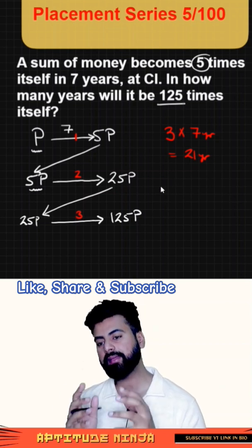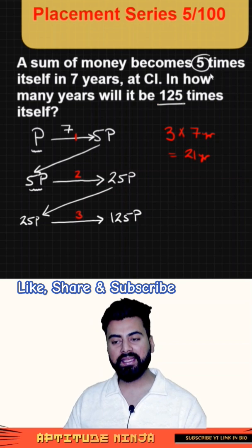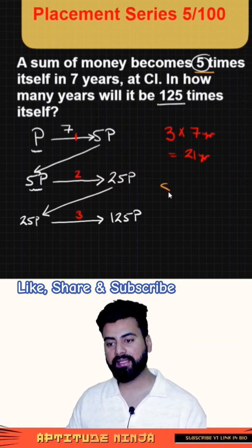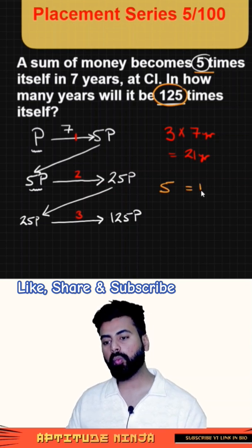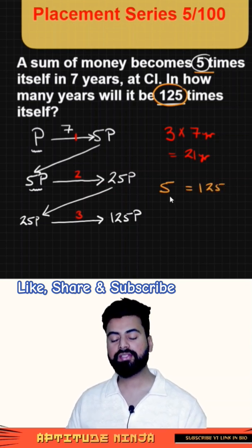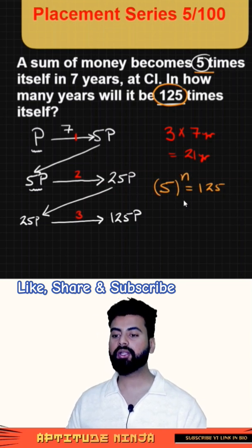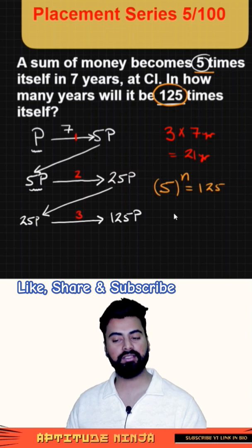Now interestingly, if you want to solve the same question in less time, what you could have done is this shortcut. First see that the sum of money is becoming how many times? You would write 5 times. And I have to make it how much? This is my goal state: 125 times. So just find which power of 5 equals 125 to get the value of N. Which power of 5 equals 125? You would say 3rd power.